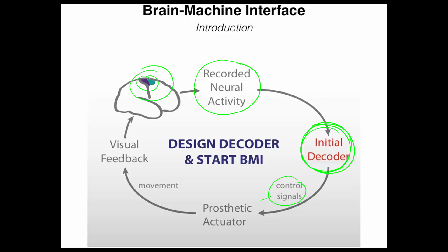These control signals can then be used to drive a prosthetic actuator, for example a robotic prosthetic arm, or stimulating the paralyzed musculature to move the natural arm, or a computer cursor on a screen. And because you can see how that prosthetic actuator moves, it completes the so-called control feedback loop, or a closed loop.